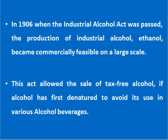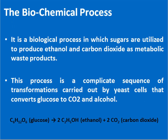In 1906, when the Industrial Alcohol Act was passed, the production of industrial alcohol — that is, ethanol — became commercially feasible on a large scale. This act allowed the sale of tax-free alcohol if alcohol was first denatured to avoid its use in various alcohol beverages. As it is a type of microbial product, a biochemical process should be behind the production of ethanol. It is a biological process in which sugars are utilized to produce ethanol and carbon dioxide as metabolic waste products.